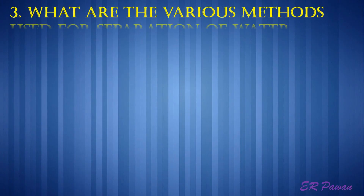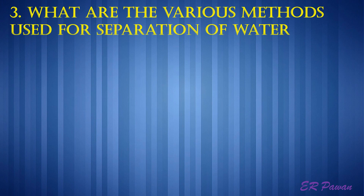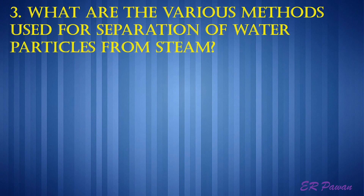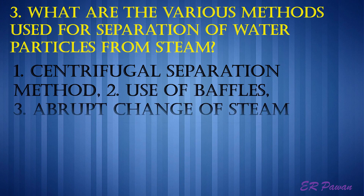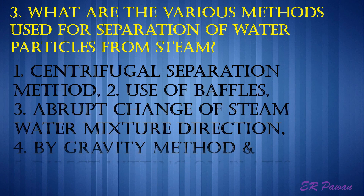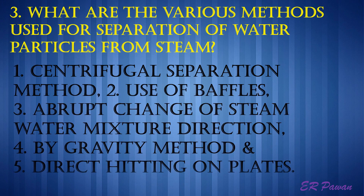Question 3: What are the various methods used for separation of water particles from steam? 1. Centrifugal separation method, 2. Use of baffles, 3. Abrupt change of steam-water mixture direction, 4. By gravity method, 5. Direct hitting on plates.